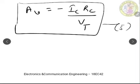From Equation 5, Av is directly proportional to IC, the bias current. So as long as the bias current is stable, the gain will be stable. This is the conclusion from Equation 5.